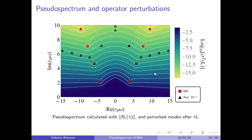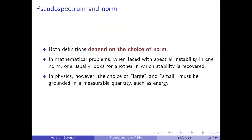One thing to note is that both definitions depend on the choice of norm. When faced with spectral instability in one norm, one might look for another norm in which stability might be recovered, but in physics we want our choice of what is large and small to be based on a physically measurable quantity such as the energy. That is why we say there is a physical instability — the spectrum is unstable with respect to the energy norm.